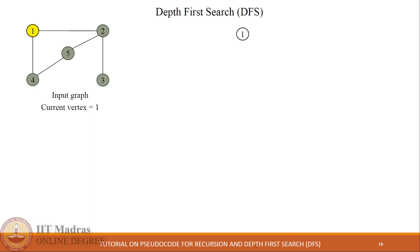We need to find all the neighbors of the current node. Vertex 1 has 2 neighbors: 2 and 4. As discussed in the lecture, we choose the next vertex in ascending order, so we choose vertex 2.